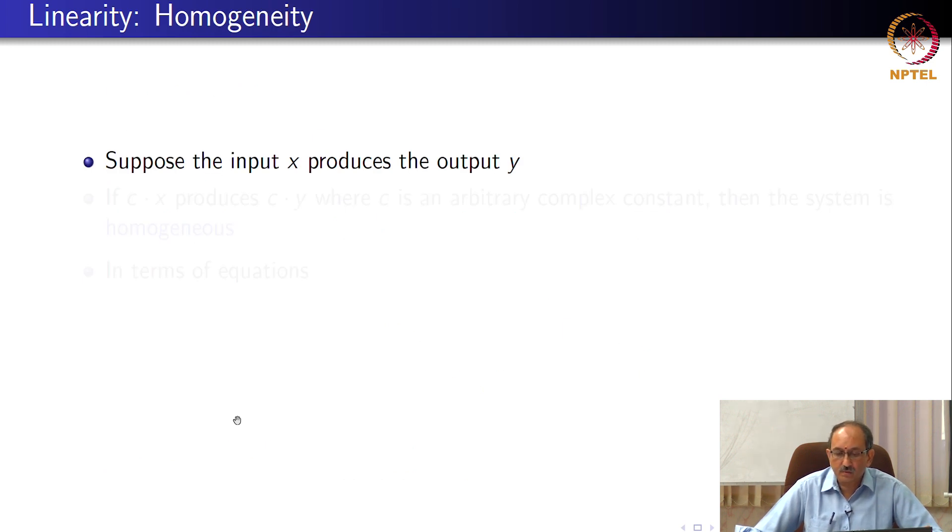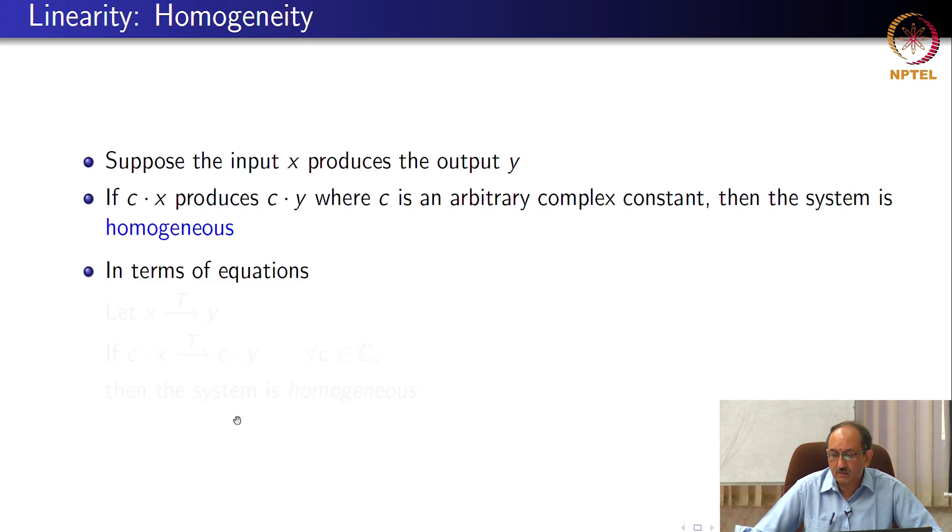And the other property associated with linearity is homogeneity. So, if x produces y, then c times x must produce c times y, where c is an arbitrary complex constant, in which case the system is homogeneous. So, these are the definitions, right? x produces y, c times x produces c times y, for all c belonging to the set of complex constants.